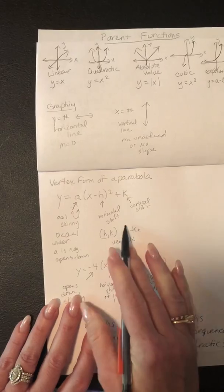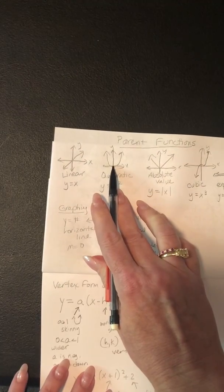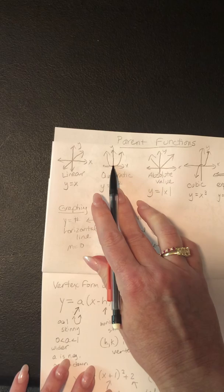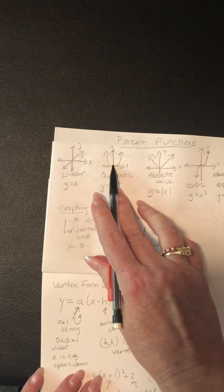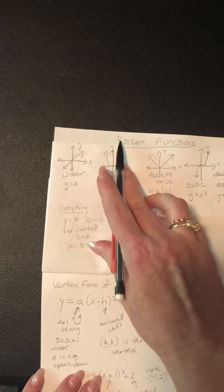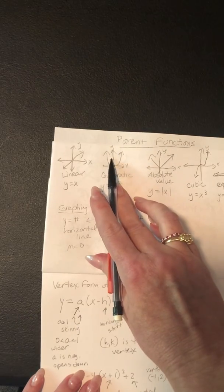And that's why the vertex itself, excuse me, the vertex is negative 1 comma 2. Because it went from 0, 0 in its parent function and it's going to shift up 2 and left 1. So it would be a parabola where the vertex is like right there.